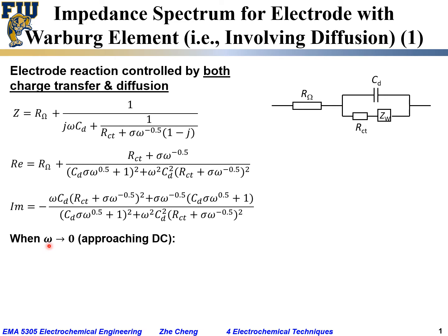Now let's look at some simplifications. The first case is when angular frequency ω approaches zero, meaning we are approaching DC. As ω → 0, terms involving ω² and ω·C_dl go toward zero. The ω^(−0.5) term also goes toward zero at DC. The denominator approaches one, so the real part simplifies to R_ohm + R_CT + σω^(−0.5).